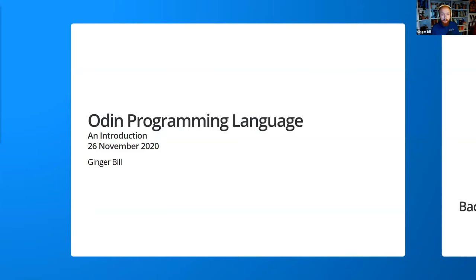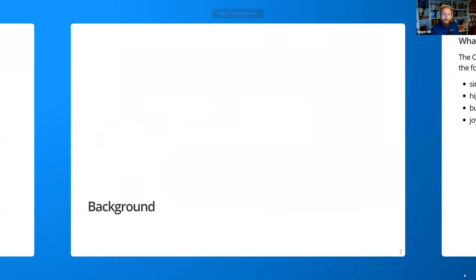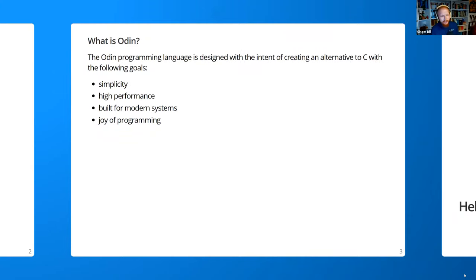Hello and welcome. I'm Ginger Bill and today I'm giving a presentation introducing the Odin Programming Language, of which I am the creator. Let's start with a bit of background around the language and myself. So what is Odin? The Odin Programming Language is a language designed as an alternative to C, with the goals of simplicity, being built for high-performance machines and modern systems, and the joy of programming.